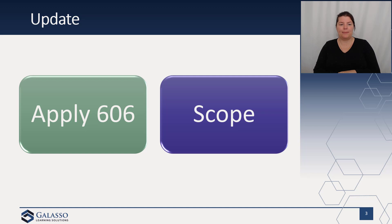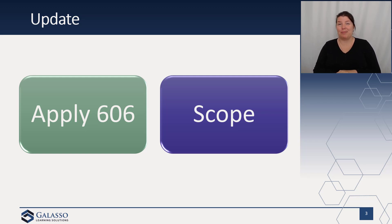This update basically tells us that it's going to require that the acquirer, instead of using fair value under the acquisition method, will instead recognize and measure the contract assets and contract liabilities acquired in a business combination in accordance with Topic 606. So instead of using Topic 805, we're going to follow Topic 606.